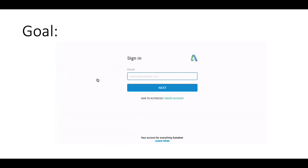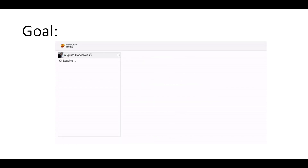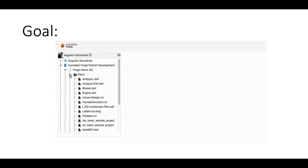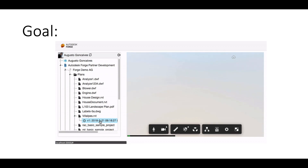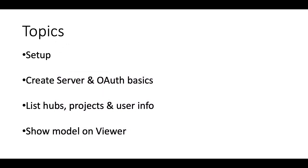The goal of today's training is to create an application where you can sign in with your Autodesk account, see all your accounts, see your projects, select a folder, a file, and see that file on the viewer. We'll be covering the following topics: setup, create server and OAuth basics, list hubs, projects and user information, and finally how to show that model on the viewer.